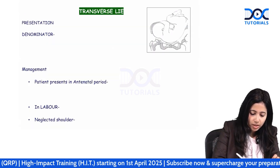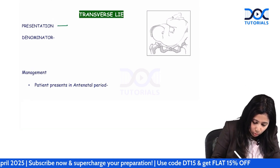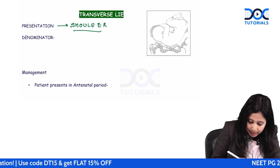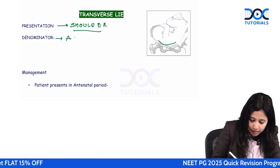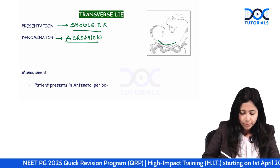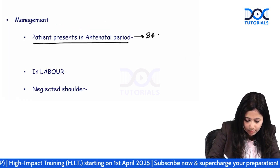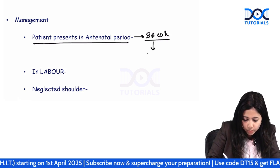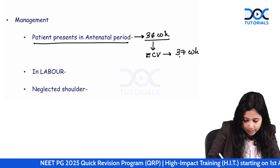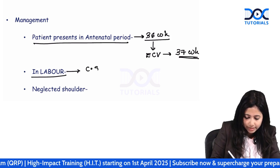Moving ahead with transverse lie: in transverse lie the presentation is shoulder presentation with the denominator as acromion. For management antenatally, reassess the patient at 36 weeks. If still transverse lie, go ahead with external cephalic version, usually done by 37 weeks. If patient comes to you with transverse lie in labour, your answer is cesarean section.